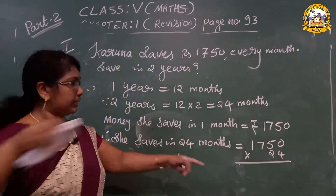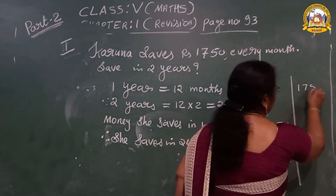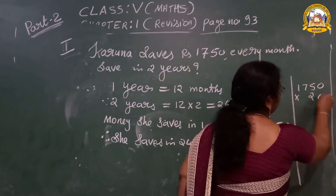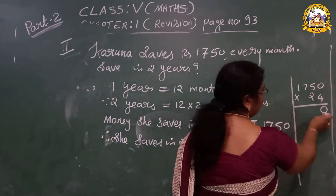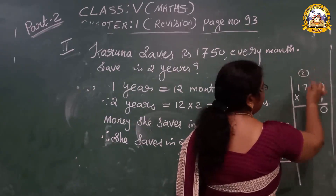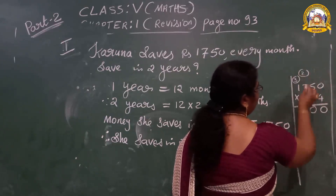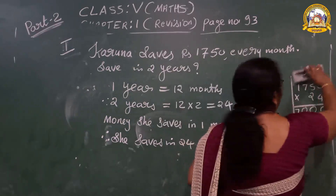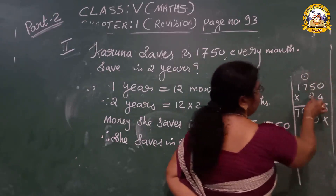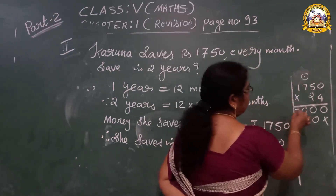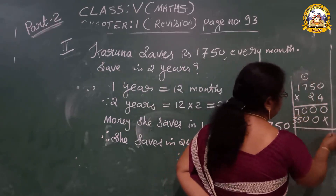Working through 1,750 × 24: 4 × 5 = 20, carry 2. 4 × 0 = 0. 4 × 5 = 20, carry 2. 4 × 7 = 28, plus 2 = 30, carry 3. 4 × 1 = 4, plus 3 = 7. Now put the cross sign for 1s place, then multiply by 2. 2 × 0 = 0. 2 × 5 = 10, carry 1. 2 × 7 = 14, plus 1 = 15, carry 1. 2 × 1 = 2, plus 1 = 3.